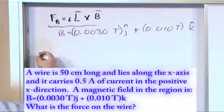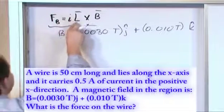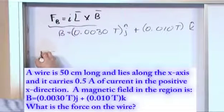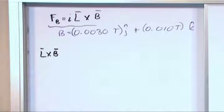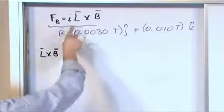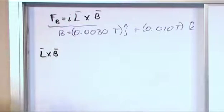So let's set up, first of all, forget about i, let's find L cross B. L cross B. We're going to find this cross product of these two vectors and then when we get the answer, we'll multiply by the current that we have and then we'll get the final answer.